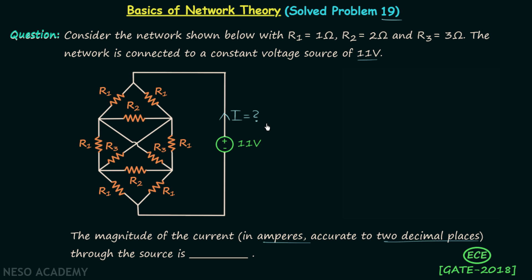Now pause the video and try to calculate current I. In order to calculate current I, we are required to simplify the combination of resistors in the network. As you can observe, we are not getting a direct series or direct parallel combination of resistors, and therefore we are required to find out the equipotential points using the symmetry present in the network.